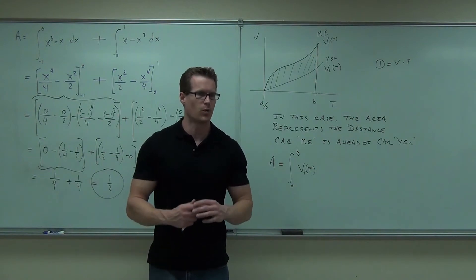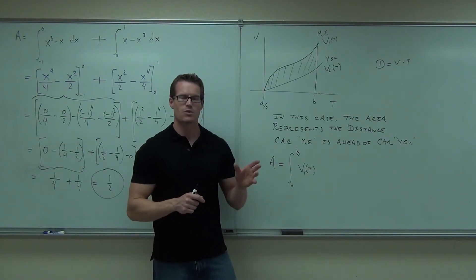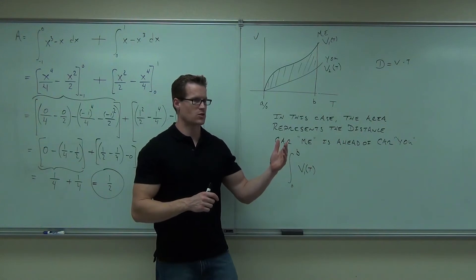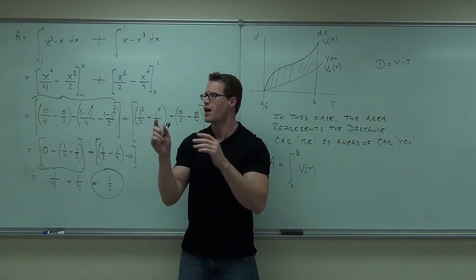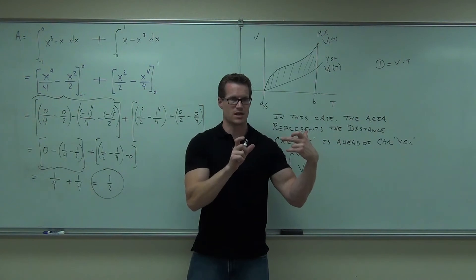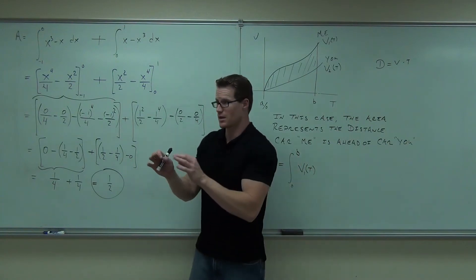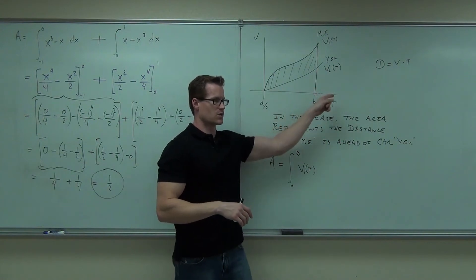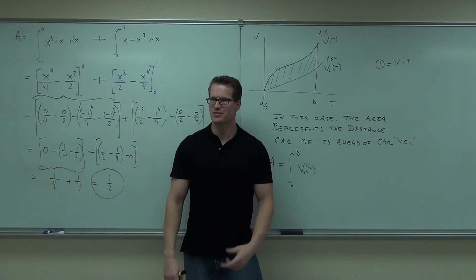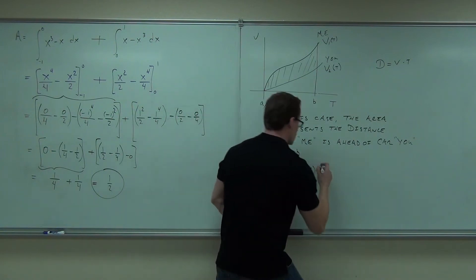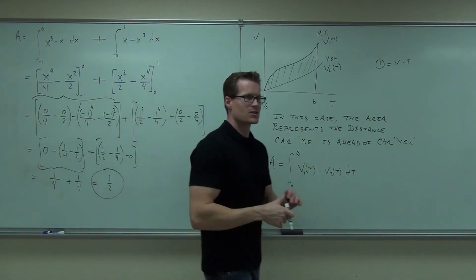If you wanted to figure out the total distance at the end that I'm ahead of you, that would be a net change — you'd just do one integral. If you want to find the total distance as we went, as a cumulative effect of how much our cars were apart whether I was in front or you were in front, that's where you have all those different integrals. The area between the curves represents the overall distance we were apart. The net integral from a to b says at the end of the game who was ahead.